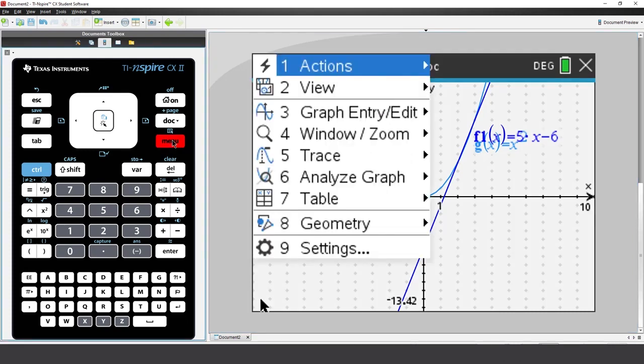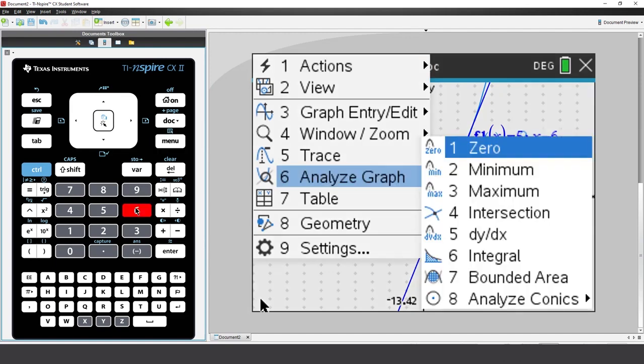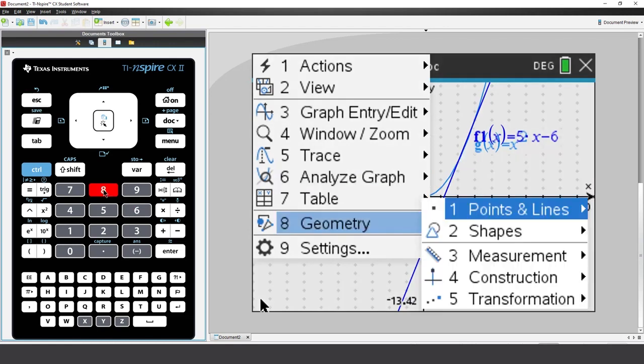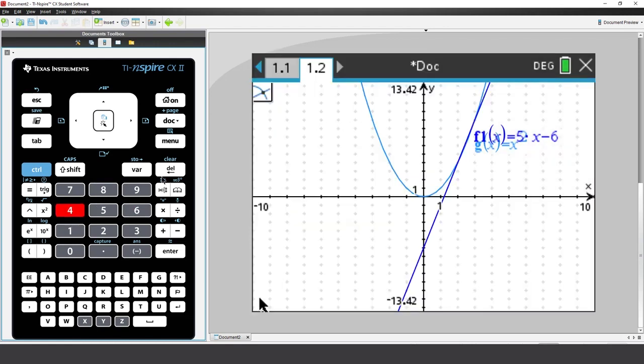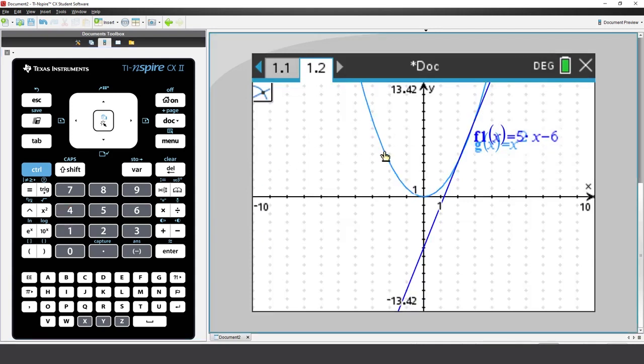Press Menu. Now I could select Analyze, and then Points of Intersection, but I could also use the Geometry tool. Points and Lines, Intersection Point. Select the first graph, select the second graph, and there's my Points of Intersection.